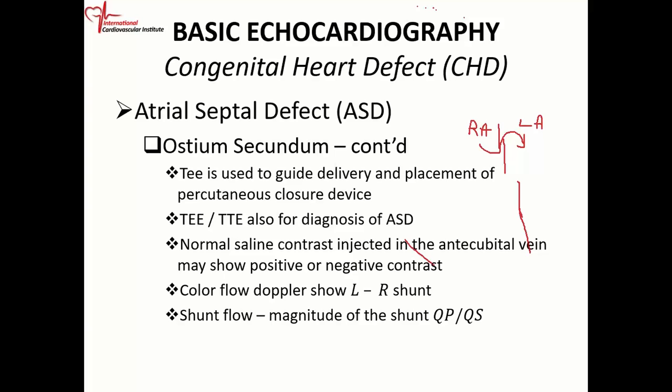First, agitate the saline using a three-way stopcock. Put 10 cc's of saline in one tube and about 3 cc's in the other, and move it back and forth until you get bubbles. Then rapidly inject the 10 cc's of agitated saline into the antecubital vein. It will go to the right side of the heart, and if there's a defect, it will travel to the left side.